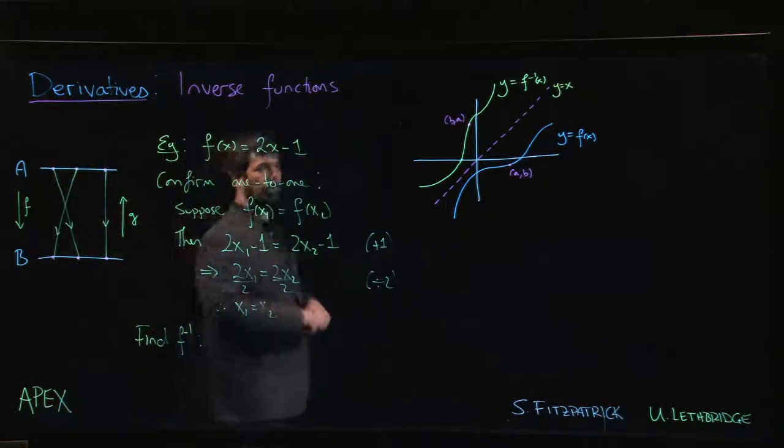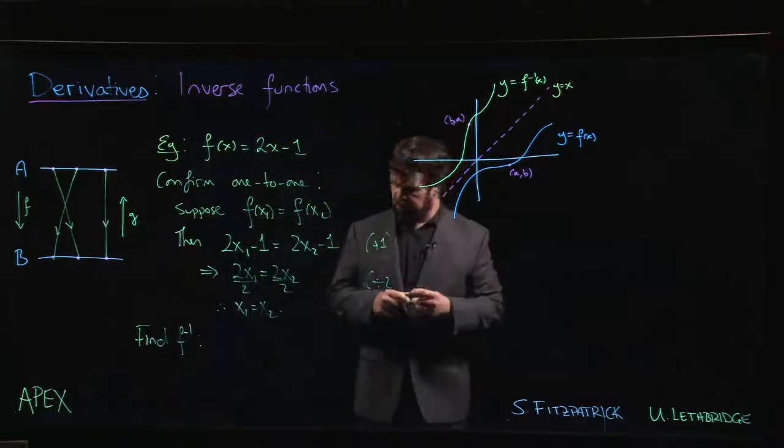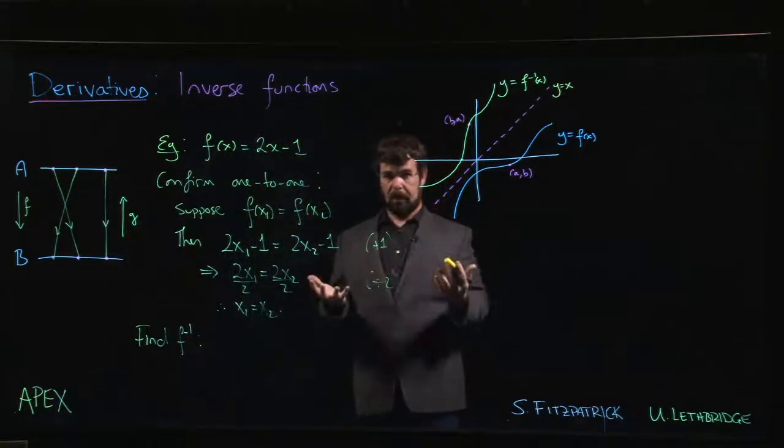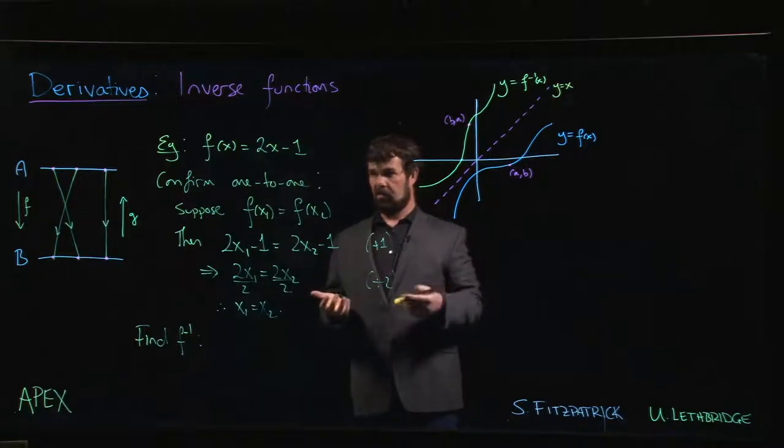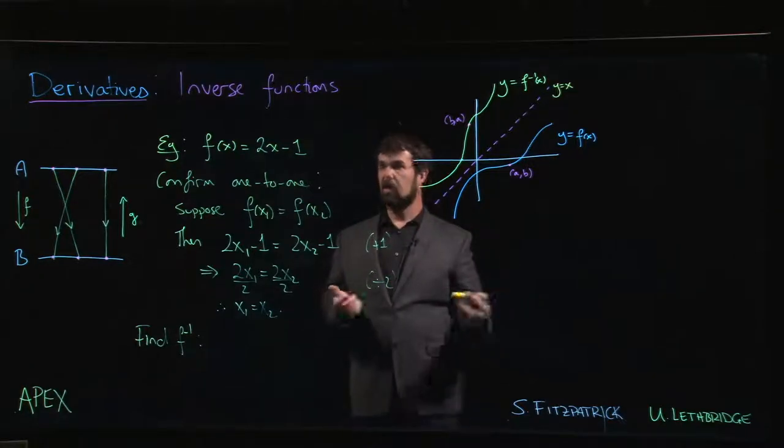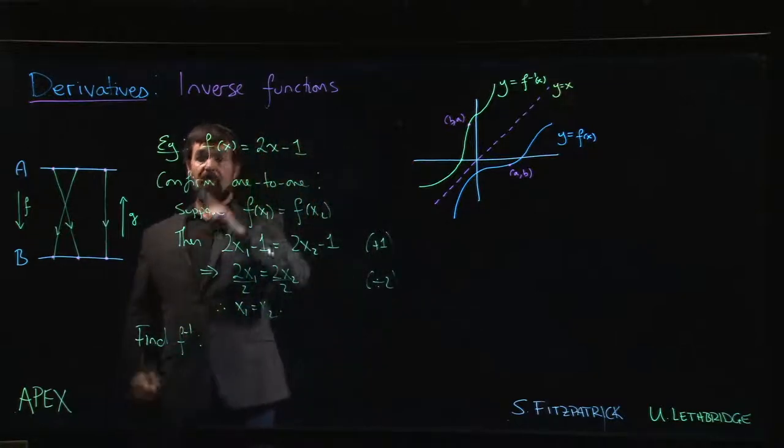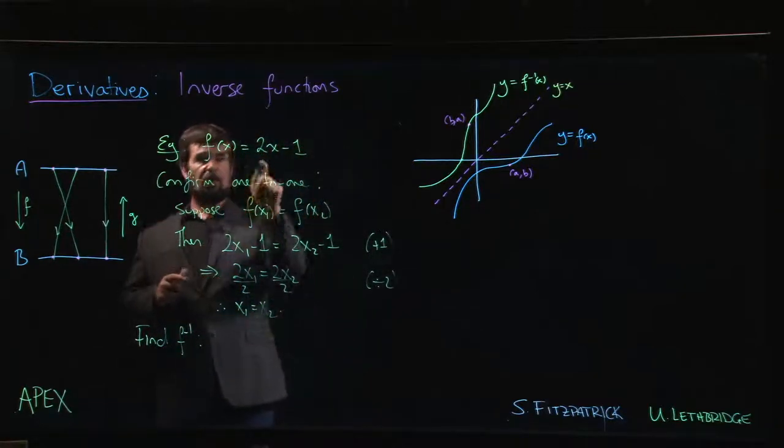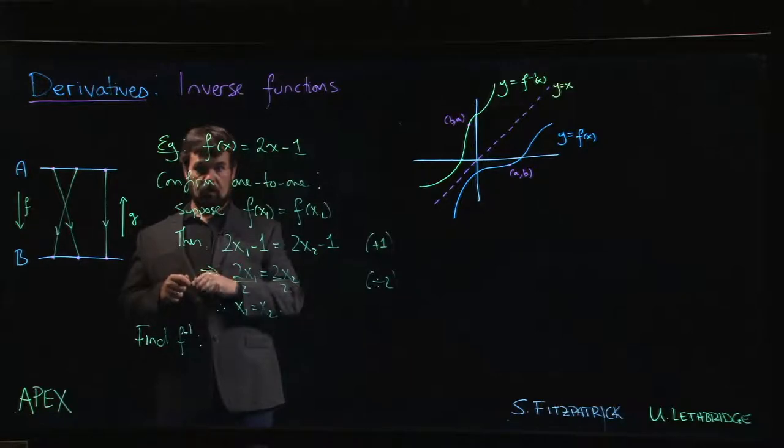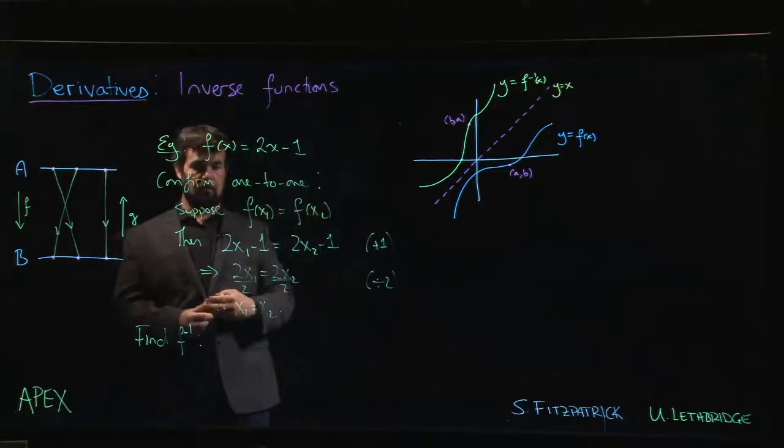Well, there's a couple of ways that you can find it. One way is if you think about what's going on with a function like this, think about what the inverse does. What is this function? This is the function which takes an input x, first it multiplies by 2, and then it subtracts 1 from the result.